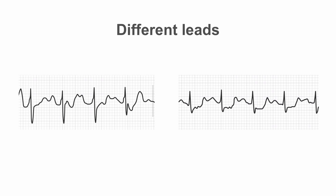We have to keep in mind the idea of contiguous leads when looking for ST segment depression. For example, if we think there's some ST segment depression in lead I, we're going to go ahead and look in AVL. If we think there's something going on in V5, we're going to look at V6 and V4. So looking at neighboring leads can be helpful.